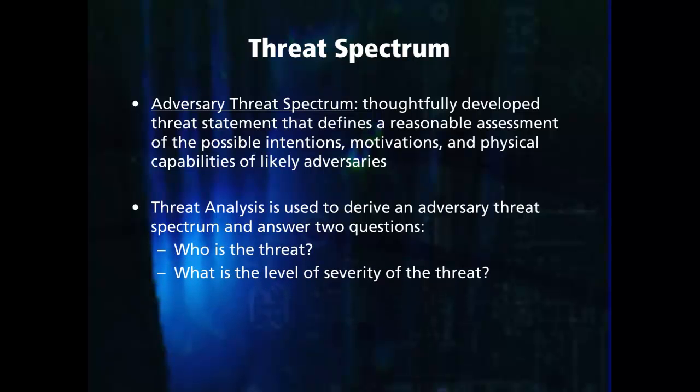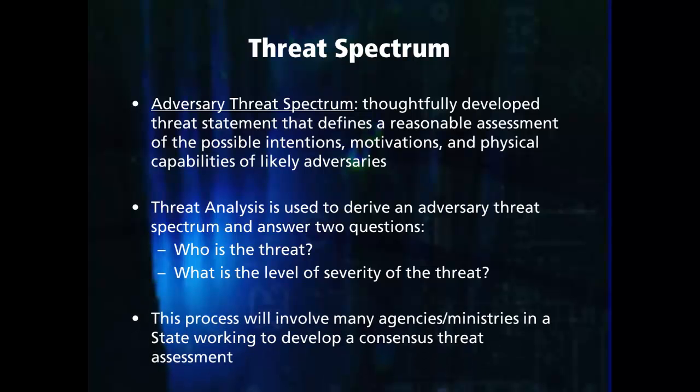The process of developing the threat spectrum will involve a number of agencies and ministries in a state in order to develop a consensus threat spectrum. For example, in the United States, the threat assessment will include information from the intelligence community, which includes the FBI, CIA, DEA, and Armed Forces Intelligence, as well as state and local governments and law enforcement agencies.